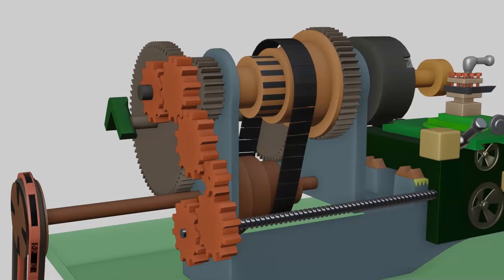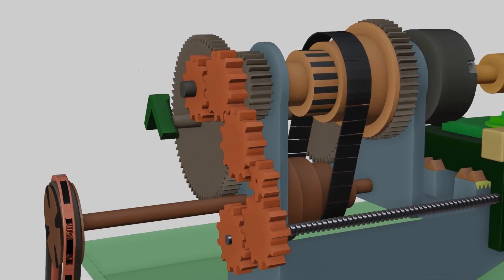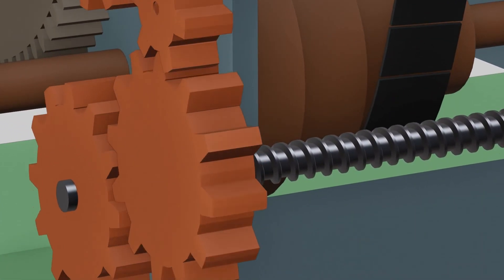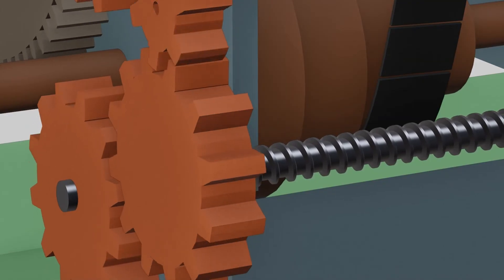This tumbler gear mechanism is used for changing the direction of rotation of the lead screw. It is mainly used for thread making process. Rotation of lead screw moves carriage automatically.